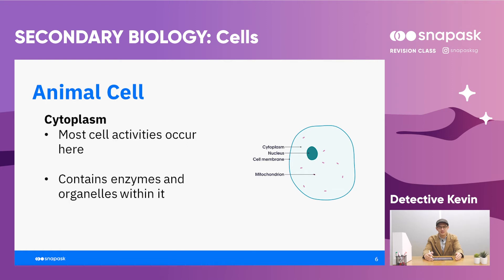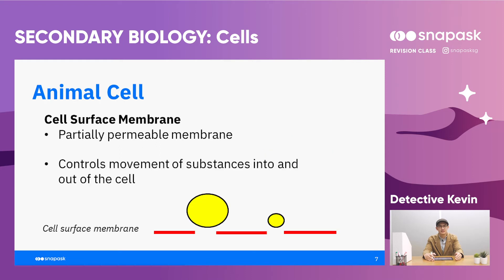The cytoplasm is where most cell activities occur. It contains enzymes and organelles within it. The cell surface membrane is a partially permeable membrane and it controls the movement of substances into and out of the cell.